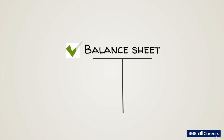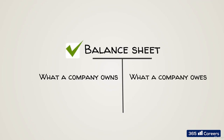As we said before, a balance sheet is a statement that shows what a company owns and owes. Every balance sheet has two sides. On one side are the firm's assets — what the company owns. And on the other side are the company's liabilities and equity — what the company owes.